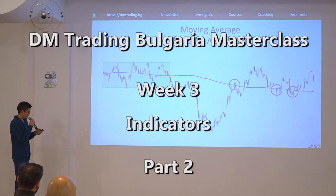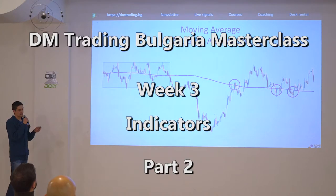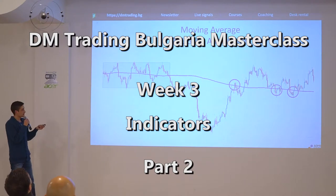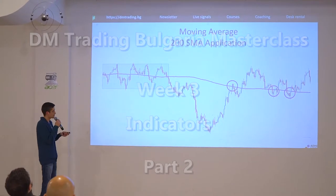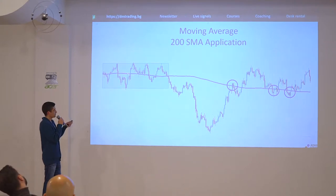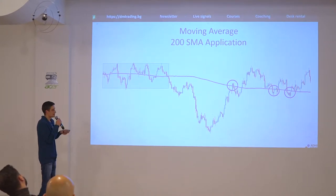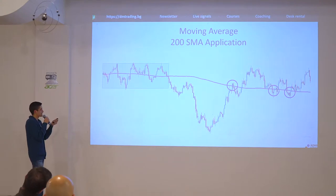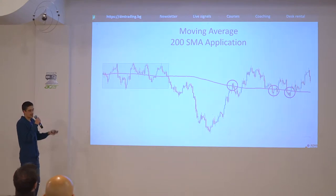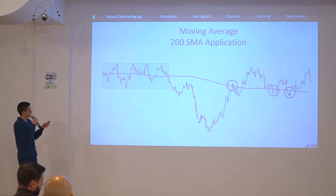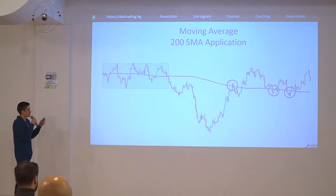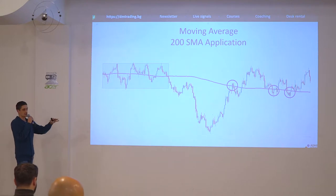Another example of a moving average. I use this example to show you that sometimes the moving average doesn't work, and one of those times is usually when we are having a strong range. In these cases, since the market is not trending, it can go above or below the moving average, so the moving average just moves in the middle.